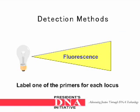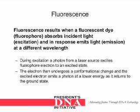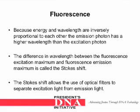Detection methods: with fluorescence, you label one of the primers for each locus. Fluorescence results when a fluorescent dye, known as a fluorophore, absorbs incident light (the excitation process) and in response emits light at a different wavelength. During excitation, a photon from a laser source excites the fluorophore electron to an excited state. The electron then undergoes a conformational change, and the excited electron emits a photon at a lower energy as it returns to the ground state.